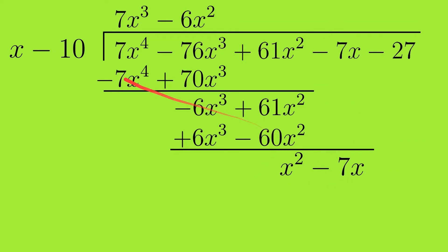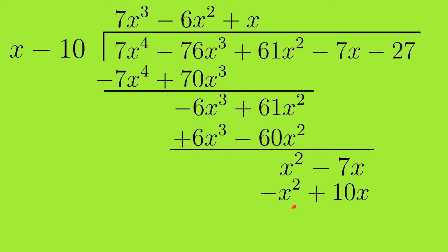We compare again: x times x equals x², so we write plus x in the quotient. Then x times (x minus 10) equals x² minus 10x. After subtracting, we are left with 3x, and the constant 27 comes down.